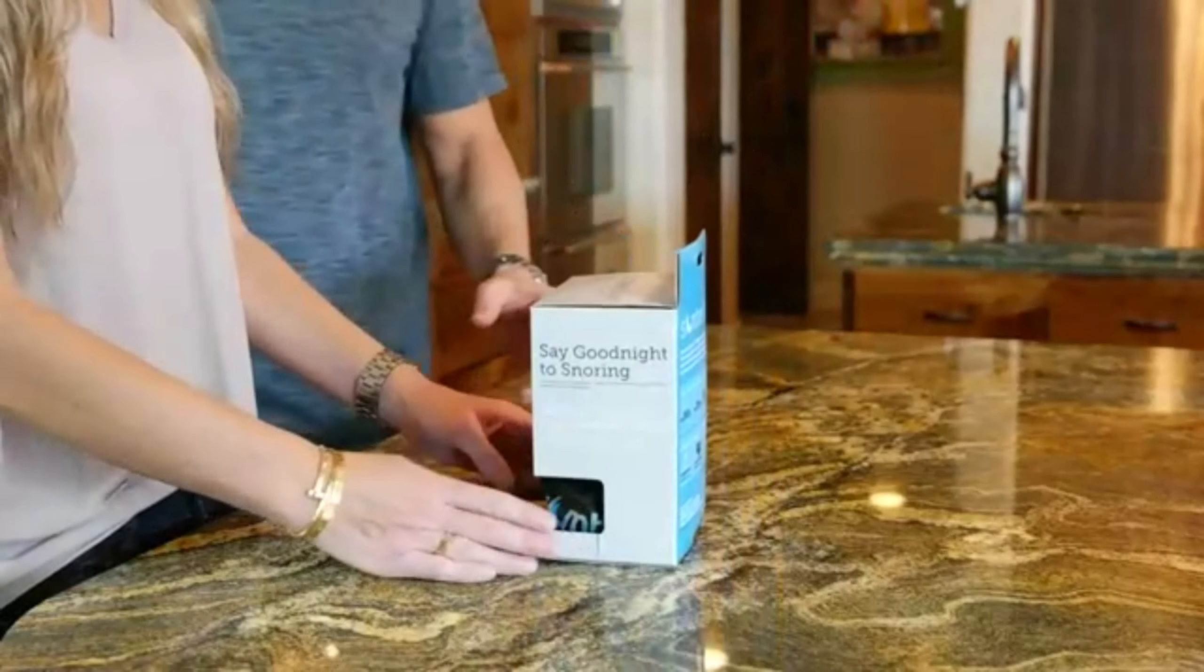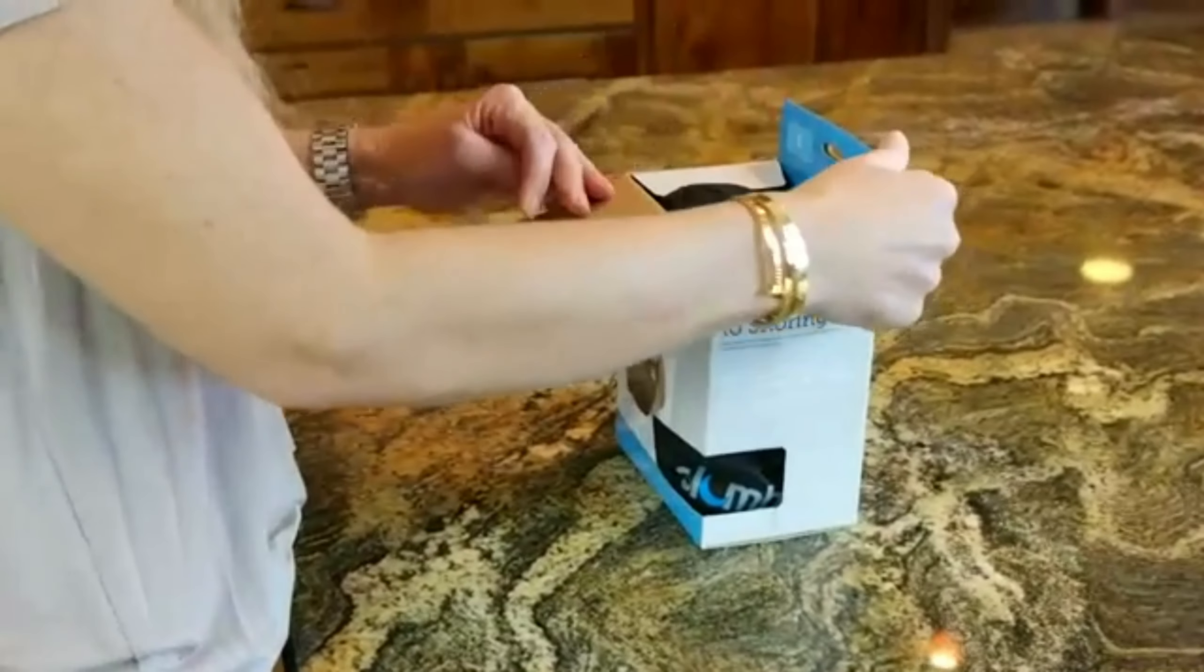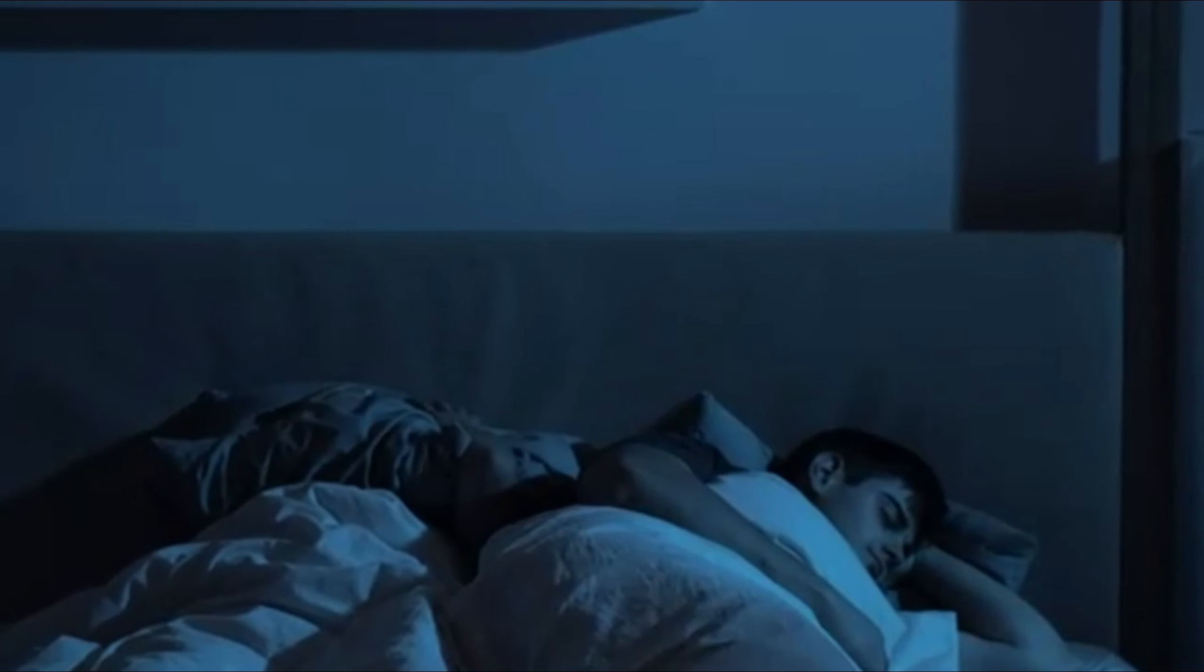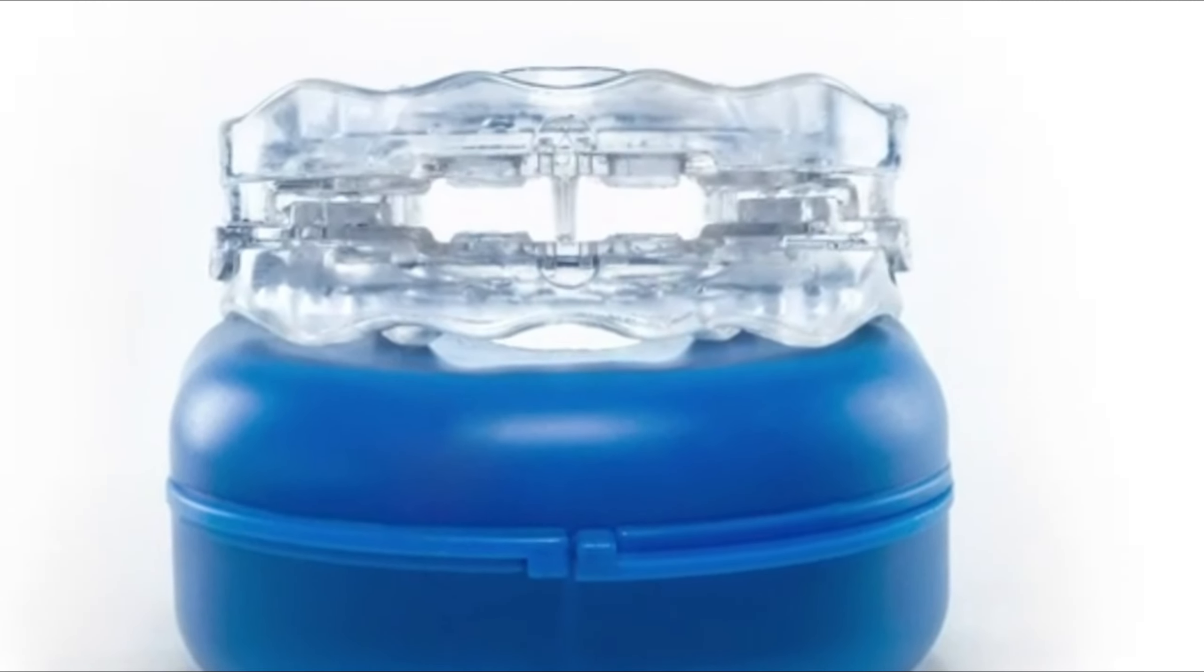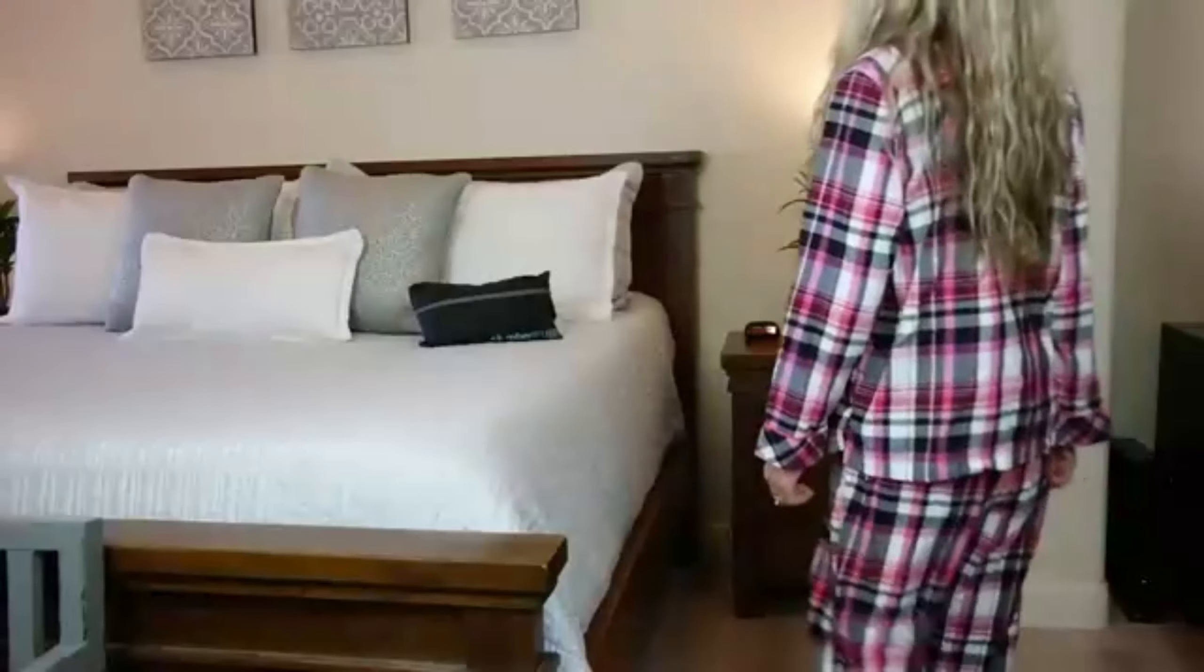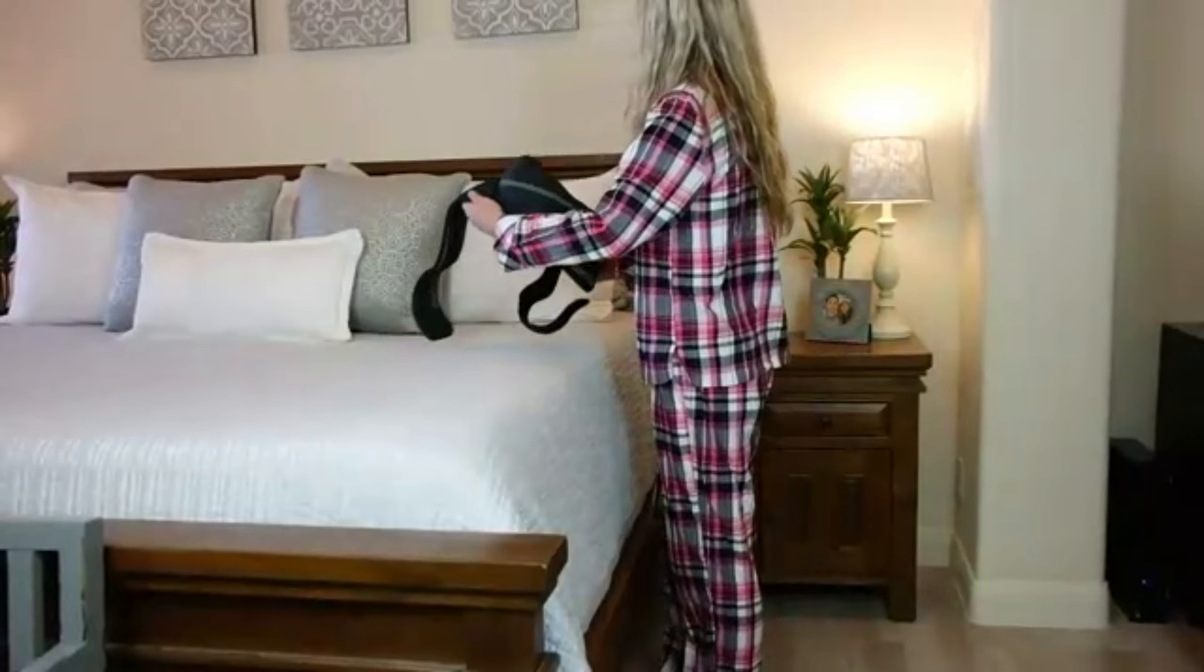Our next gadget is the Snore Circle Smart Throat Anti-Snoring Device Plus. It's an effective snoring solution that offers relief and better sleep. This smart device is designed to reduce snoring and improve the quality of your sleep. Let's explore how it works and its potential to provide you with a peaceful night's rest.